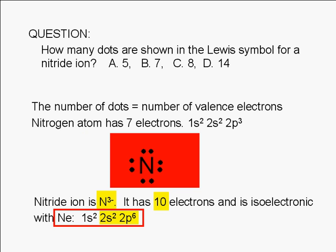Whenever we draw the Lewis symbol for an ion, we must enclose it in a square bracket and indicate the charge as a superscript. So the correct answer is 8.